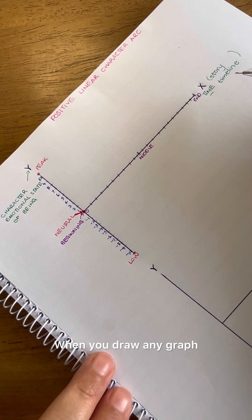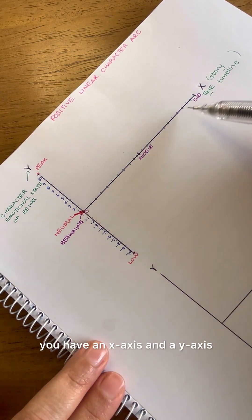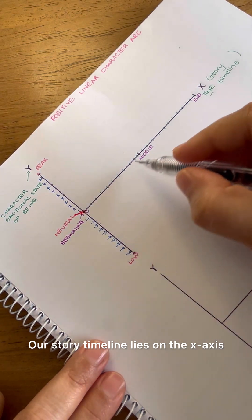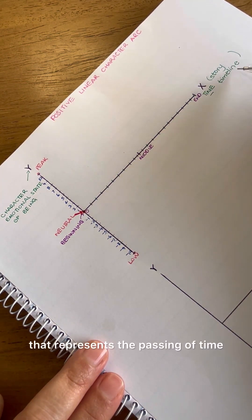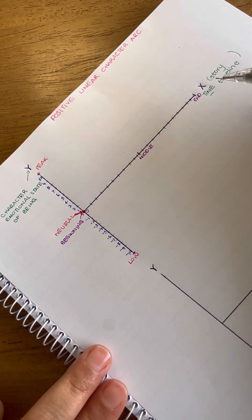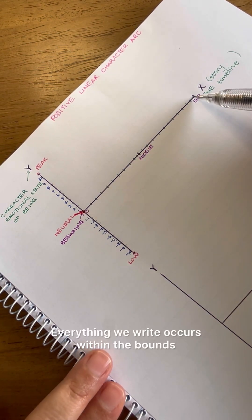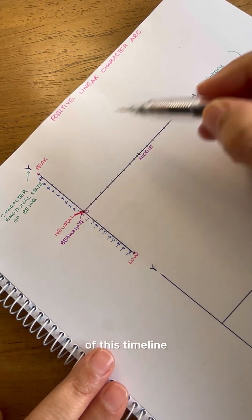When you draw any graph, you have an x-axis and a y-axis. Our story timeline lies on the x-axis. It's a straight line that represents the passing of time. It depicts the beginning, the middle, and the end of a story. Everything we write occurs within the bounds of this timeline.